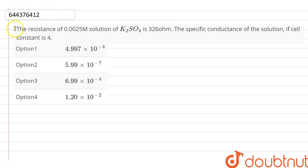Here is a question in which the resistance of 0.0025 molarity solution of K2SO4 is 326 ohm. The specific conductance of the solution if cell constant is 4.